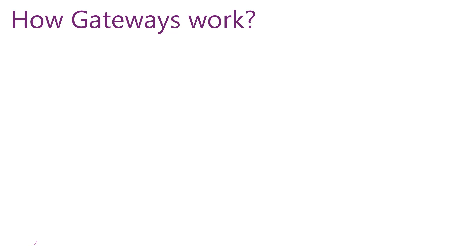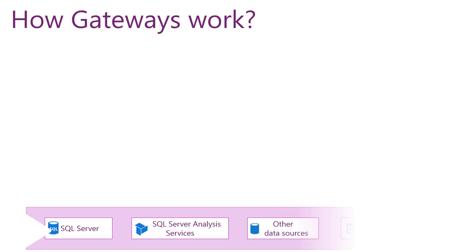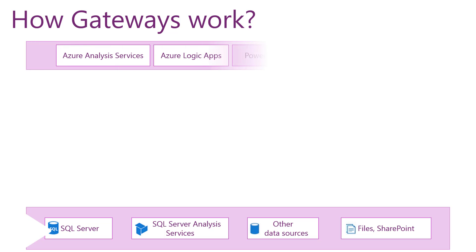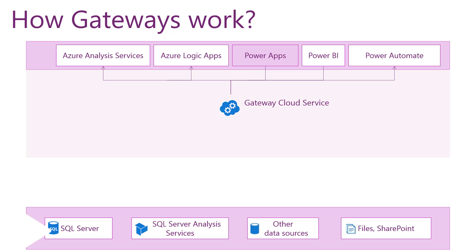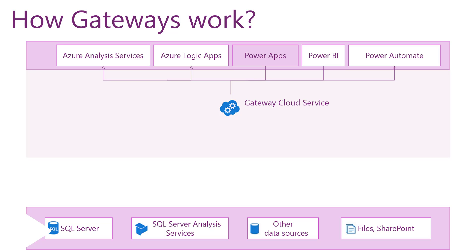Let's go deeper on how gateways work. The gateway is the bridge between on-premises data sources and cloud services. I have some on-premises data sources such as SQL Server and the on-premises SharePoint site, and I want to connect to these on-premises data sources through cloud services such as Power Apps, Power BI, and Power Automate. The cloud services prepare the query and the credentials for on-premises data and push it to the gateway queue for processing.